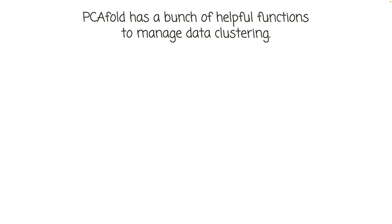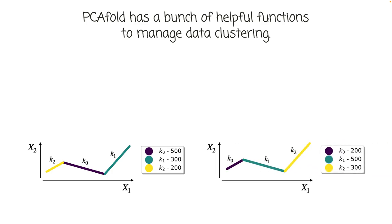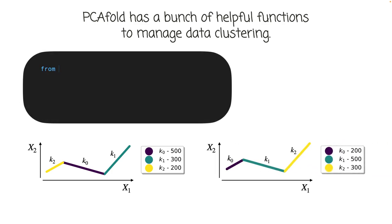PCA fold also has a bunch of smaller helpful functionalities to manage existing data clustering or to split datasets in a few simple ways. For example, sometimes the class labels come out of a clustering algorithm in no particular order. So here from left to right, VQPCA created cluster label 2, then 0, then 1. But if you want to rearrange cluster labels that reads more naturally, for example for a publication, you can use the function called flipClusters from the preprocess module.